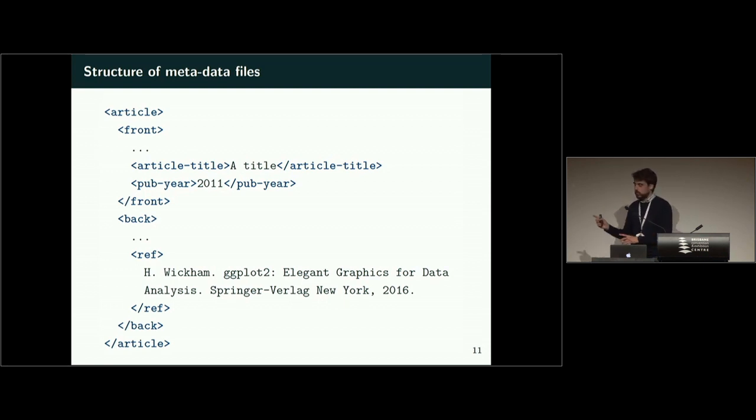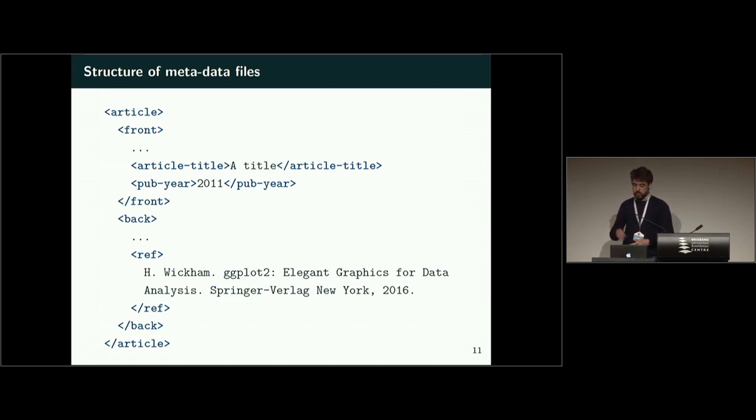If you look at the structure of the metadata files, for articles at least, they always have a front part and a back part. In the front part, there is general metadata about the article like the title, the publication year, volume and so forth. And the back part may or may not contain references and footnotes. This is actually not documented, but it's very often there. So what can the package do for you? There are a few key functions which extract the content of those parts. Just get_article will get you the main set of metadata.